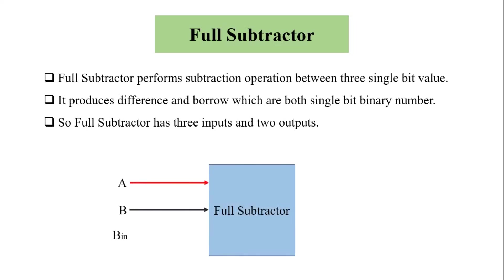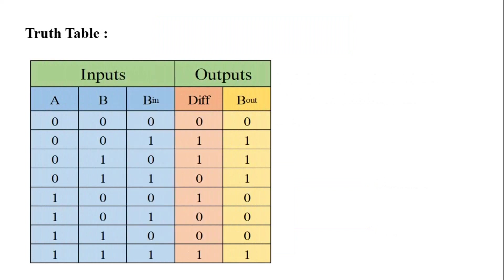This is the block diagram of full subtractor, where A, B, and B_in are the inputs and difference and B_out are the outputs. This is the truth table of full subtractor. The expression of difference and B_out can be directly written from the truth table in the SOP form.